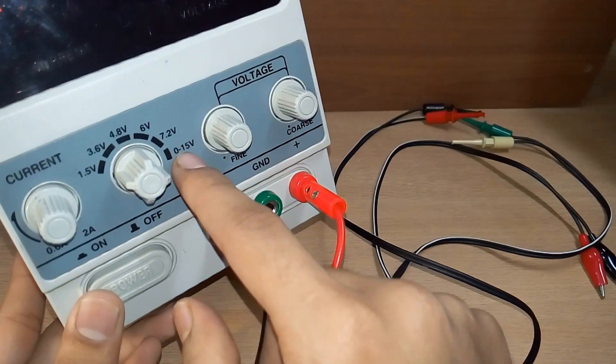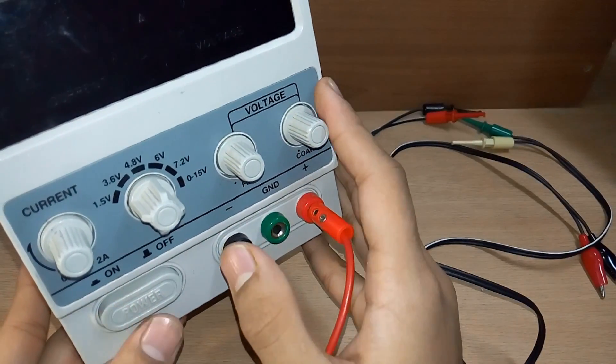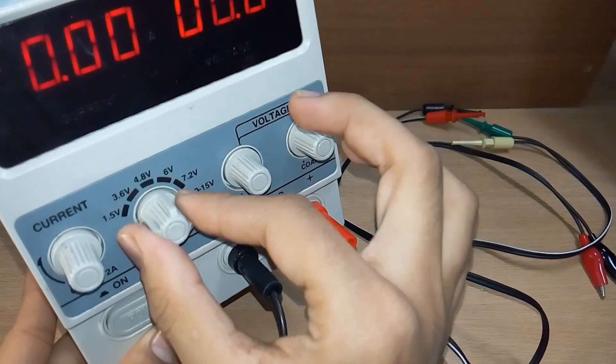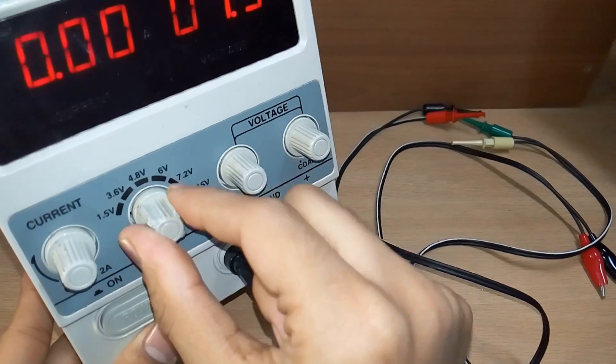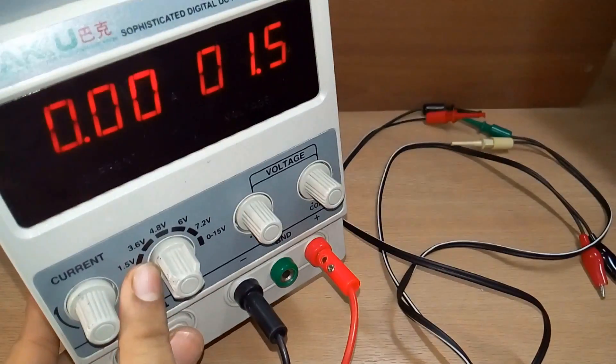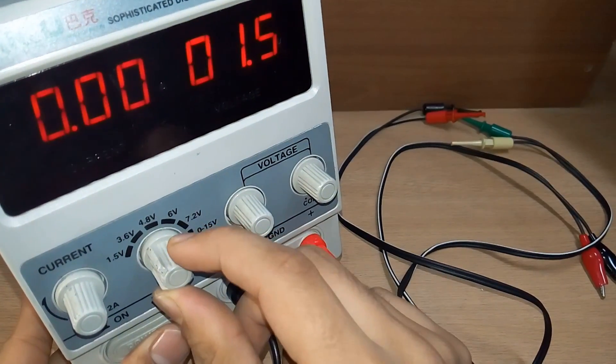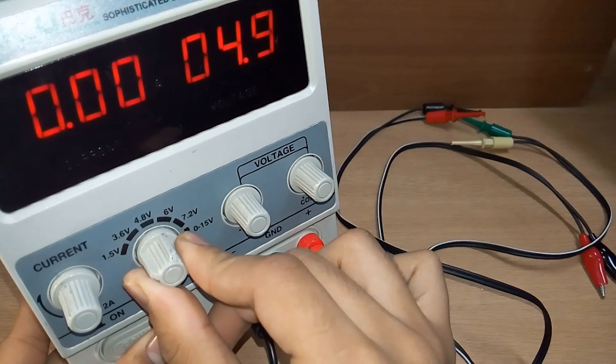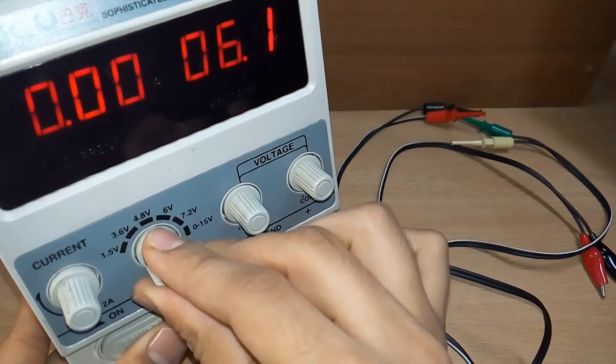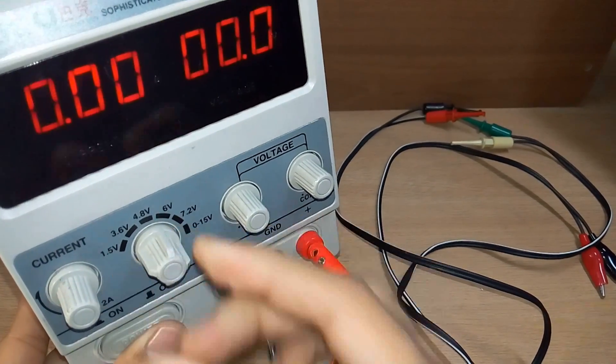By switching it on we see when we put it on the 1.5 mode it shows 1.5 volt, 3.6, 4.8, 6 volts, 11.2 volts, and finally we have the 0 to 15 volt setting wherein we can set the voltages using these two knobs.